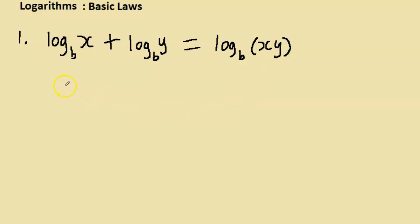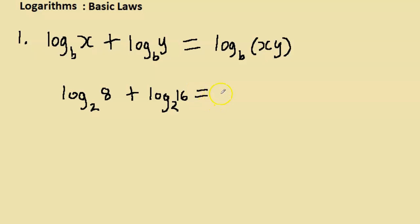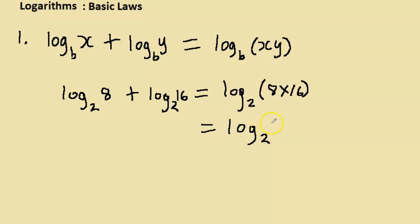For example, log 8 base 2 plus log 16 base 2 equals log base 2 of 8 times 16. That's log 128 base 2. So log 8 plus log 16 equals log 128 — you consolidate by multiplying the two values you're logging.